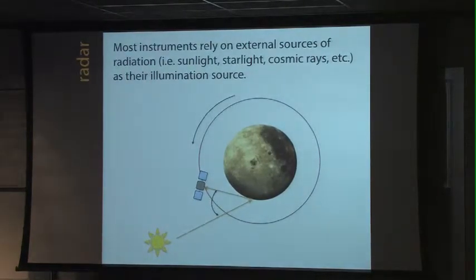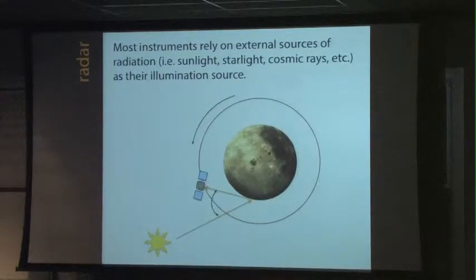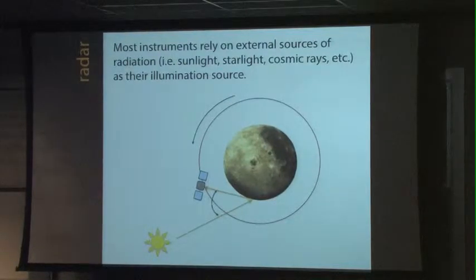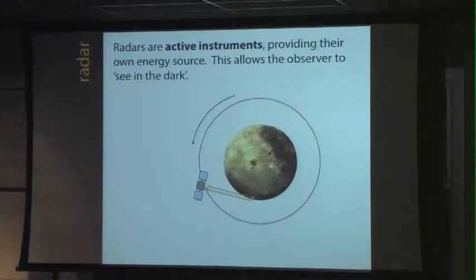A lot of the instruments we've been hearing about rely on external sources of energy like the Sun, starlight in the case of LAMP, or cosmic rays in the case of neutron spectrometers. You have your detector on board the spacecraft, but your source you don't have much control over — unlike radar, where you bring your own flashlight, your own radar flashlight, which you have complete control over. This allows you to see into regions of darkness.